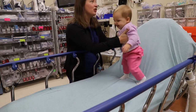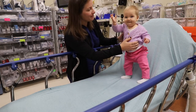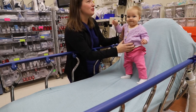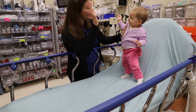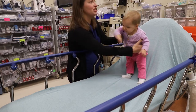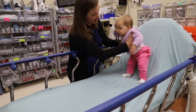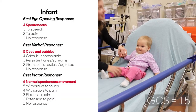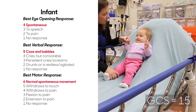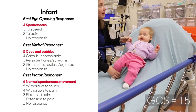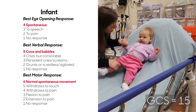Eyes are open spontaneously. Four. Baby is cooing, babbling. Verbal is a five. Has spontaneous movement. Motor is a six. The nurse documenting in the code room will add the scores together and will state the total. The documenting nurse will respond with the GCS is 15.